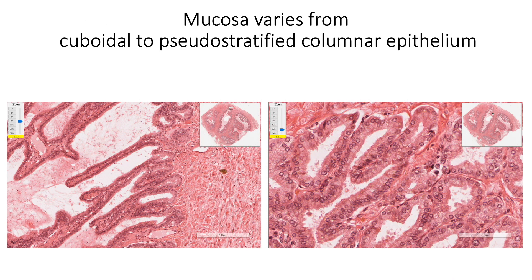The mucosa varies from cuboidal to pseudostratified columnar epithelium. Basal cells are the stem cells, whereas the cuboidal or columnar cells are the typical protein-secreting cells, showing basal rough endoplasmic reticulum and apical secretory vesicles.